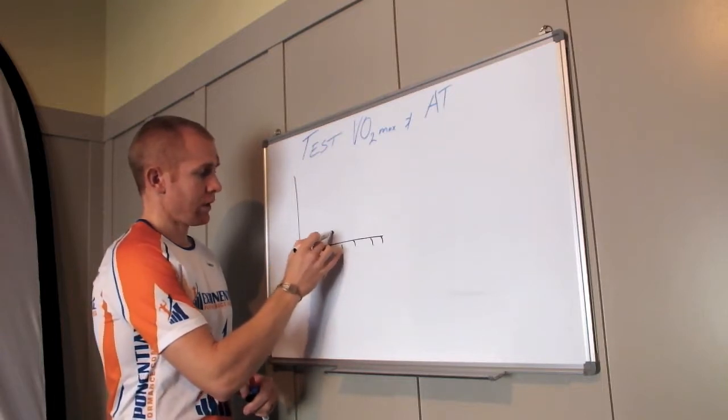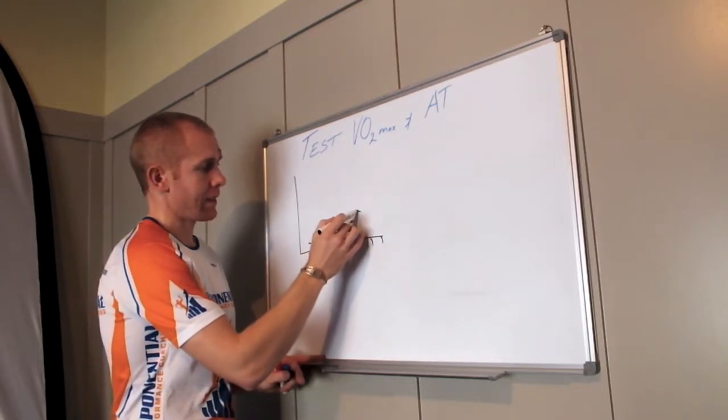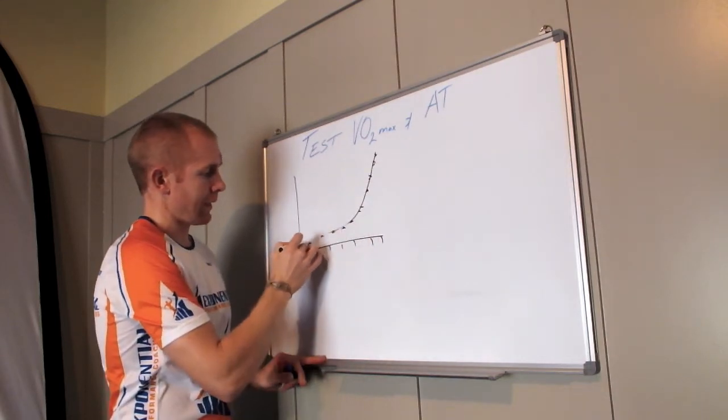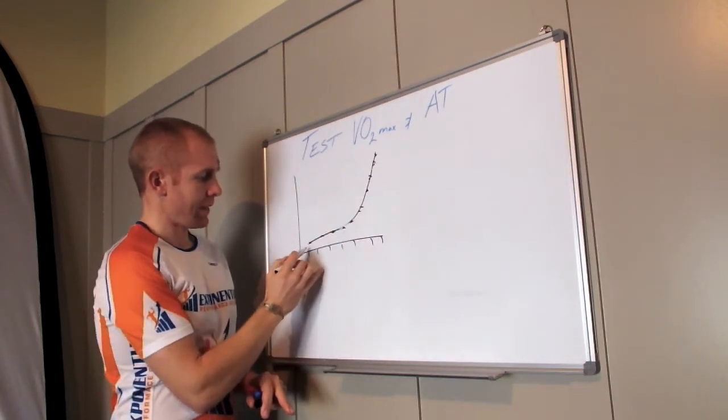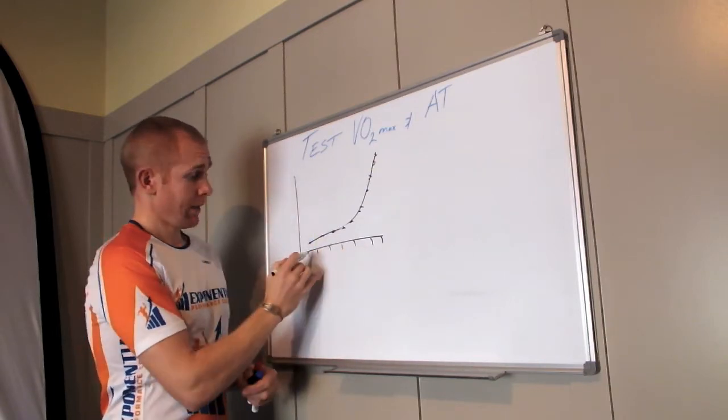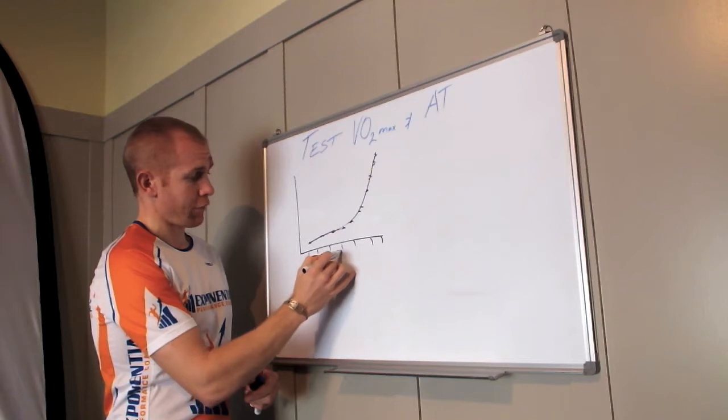As your intensity increases, so does lactate, and we get a lactate curve. Each one of these blocks may be four minutes long, which is usually a good standard. So each block is four minutes long.